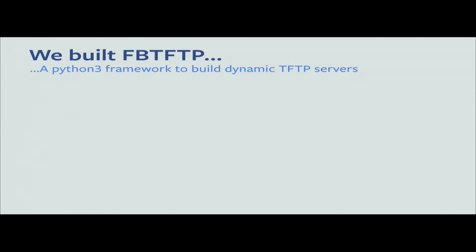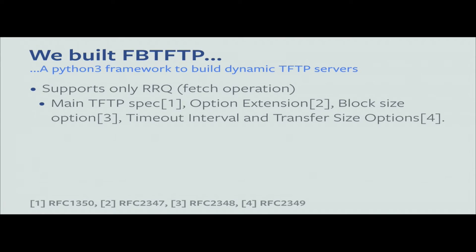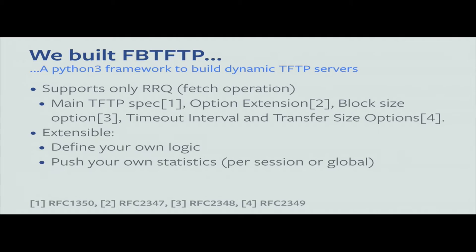We like to use open source as much as we can, but sometimes it doesn't work, so we come up with our own solutions. In this case, I decided to open source the result and it's on GitHub. We wrote a framework to build dynamic TFTP servers. It supports only RRQ — the fetch request — there is no write support; if you're using TFTP for writing, just stop. It supports the main TFTP specifications plus extensions like negotiation of block size, timeout intervals, and other things. It's extensible — you can import the framework, override a few classes, and define your own logic. You can also define callbacks to push your own statistics to your monitoring or alerting infrastructure.